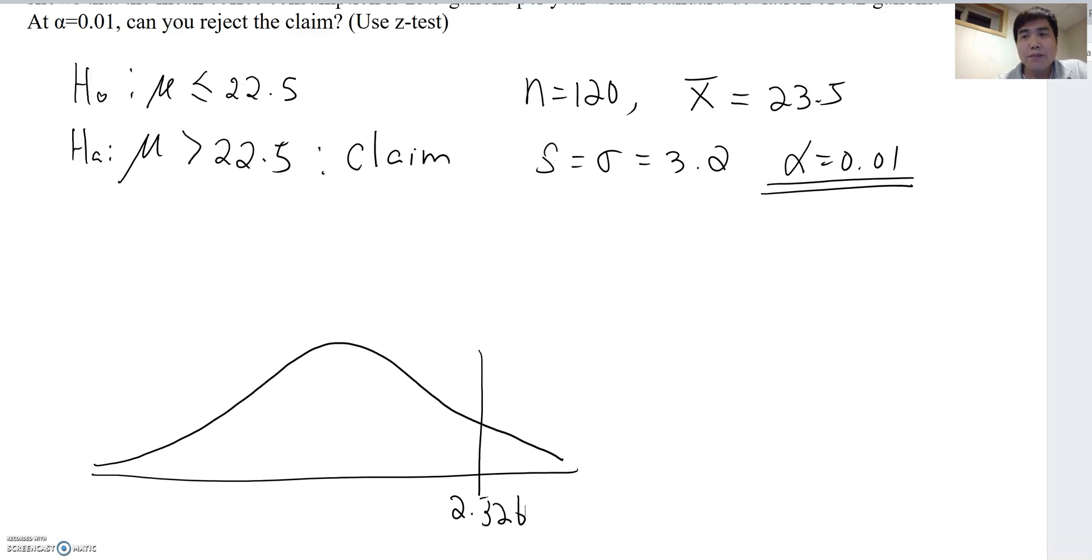If it was a left-tail test, then I am going to write negative 2.326, and then this number will be about here. But this time, this is a right-tail test, so it becomes 2.326, which means this side becomes H0, and this becomes HA here.